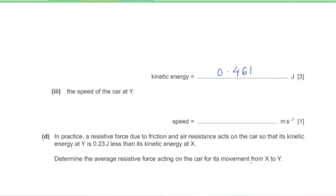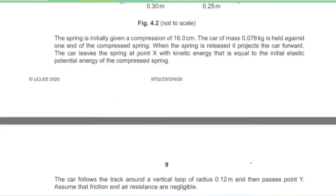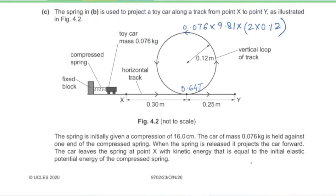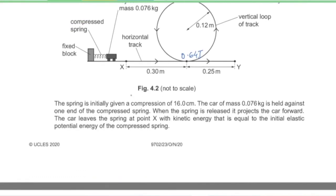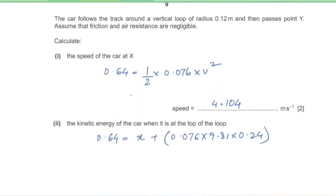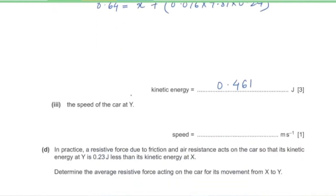Part 3: The speed of the car at Y. Since energy is conserved and there is no friction, the kinetic energy at Y equals the kinetic energy at X. So the speed at Y is the same as at X: 4.104 m/s.